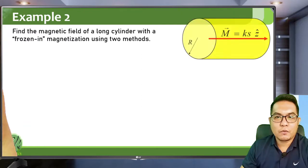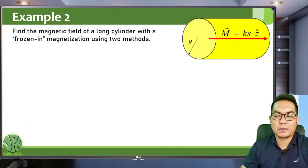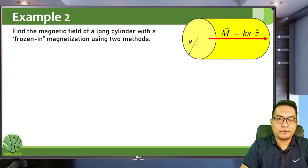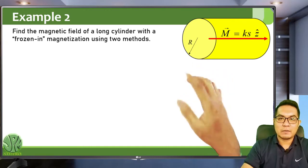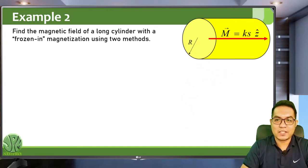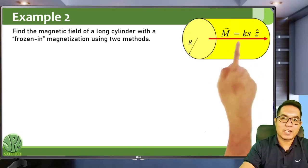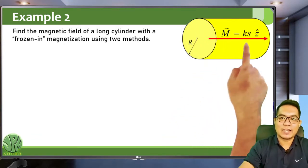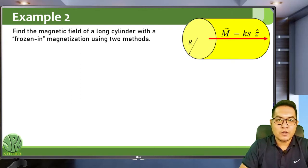For our second example, we have a frozen-in magnetization — similar to the frozen-in polarization from electrostatics. A cylinder has a frozen-in magnetization M = kS z-hat, which is not uniform but depends on S. The magnetization increases with distance from the axis, reaching its maximum at the surface S = R. Using two methods, we are asked to find the magnetic field of this cylinder.